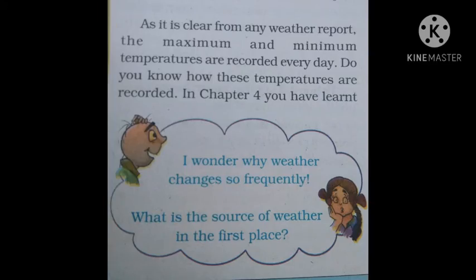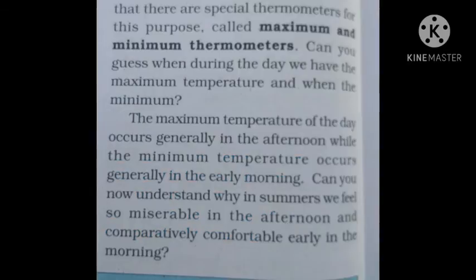As is clear from any weather report, the maximum and minimum temperature are recorded every day — यानी हर एक जगह का weather report maximum और minimum temperature record करता है। Do you know how these temperatures are recorded? In Chapter 4 you have learned that there are special thermometers for this purpose, called maximum and minimum thermometers — हमने Chapter 4 (heat) के अंदर देखा था कि temperature नापने के लिए हम thermometers का use करते हैं।